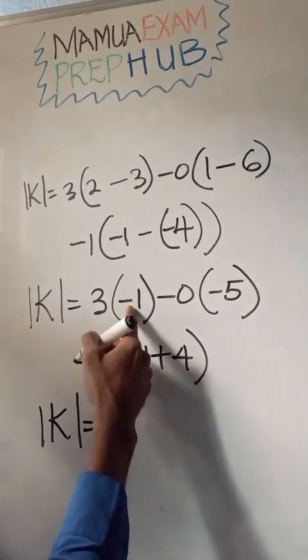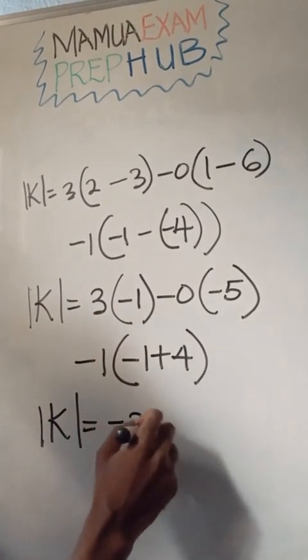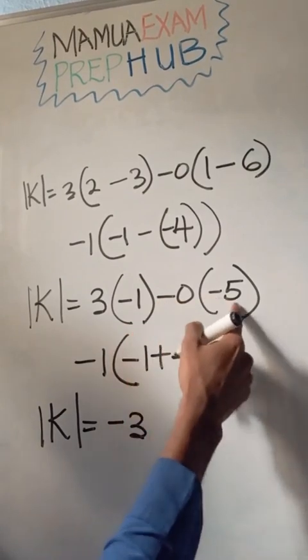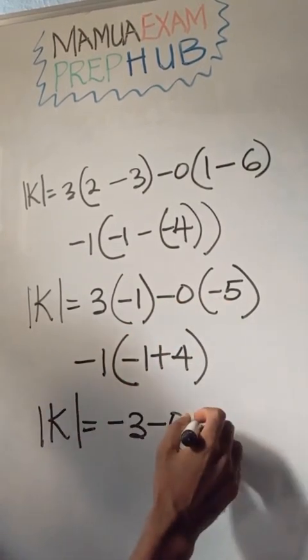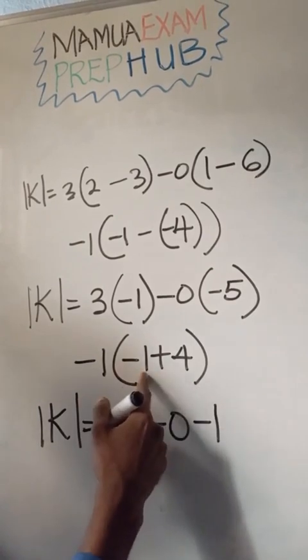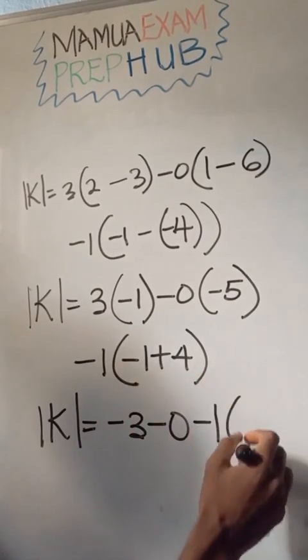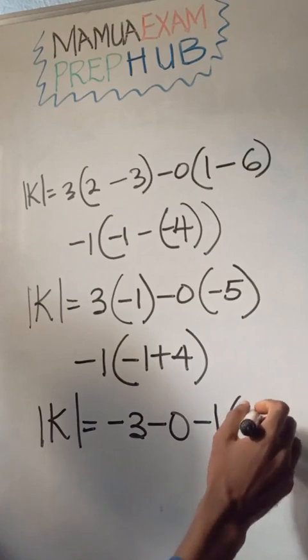I have 3 times minus 1, which is minus 3. Minus 0 times minus 5 is minus 0, so I have minus 1. Minus 1 plus 4 will give us plus 3.